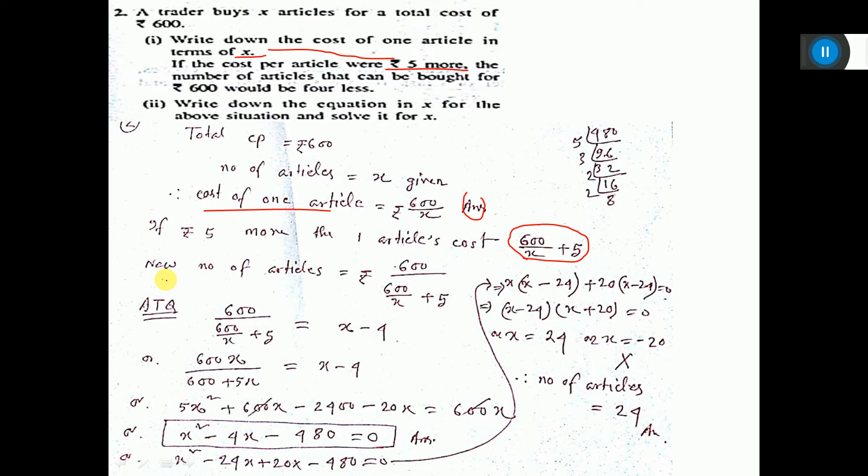Then new number of articles we will get is 600 divided by this. Now the question is telling that number of articles we are getting is four less. Four less means initially we are getting x articles, now we are getting four articles less, that means x minus four. So this is the equation we are forming. According to the question, we are getting this equation.